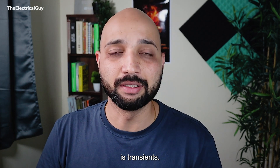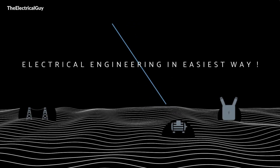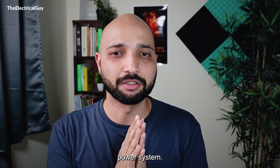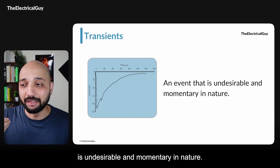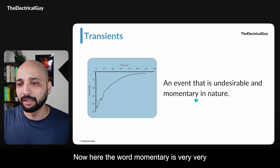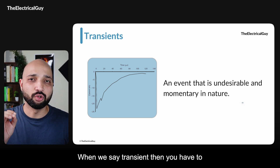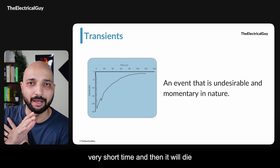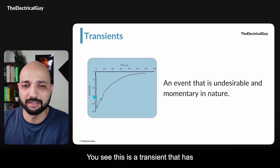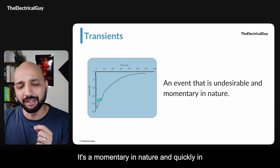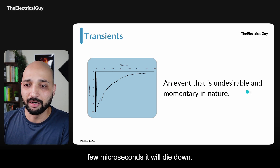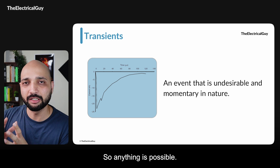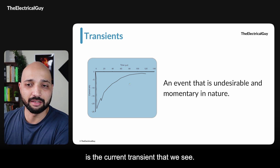Let us start by understanding what transients are. Transient is a word very commonly used in the analysis of power systems. Simply, transients are events that are undesirable and momentary in nature. The word momentary is very important — a transient will remain in the system for a very short time and then die down. You can see an example on your screen: a transient that has occurred, reaching a peak value, momentary in nature, dying down in a few microseconds. It could be a voltage transient or a current transient.